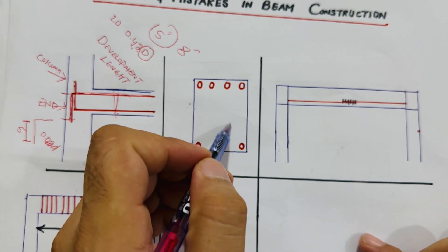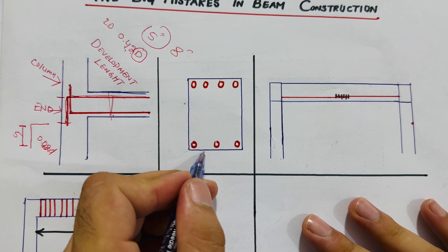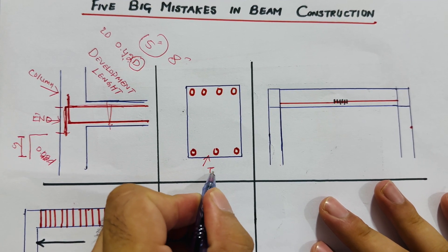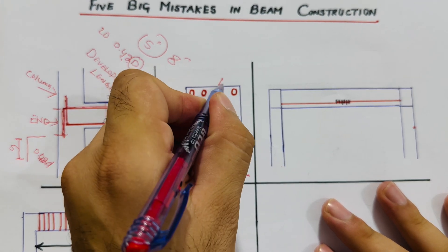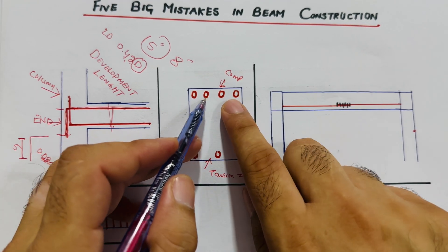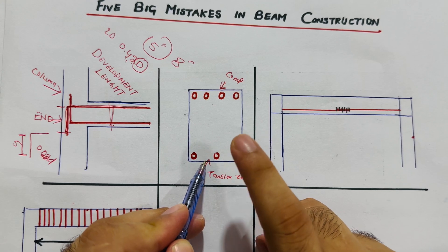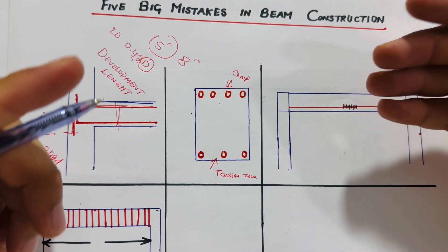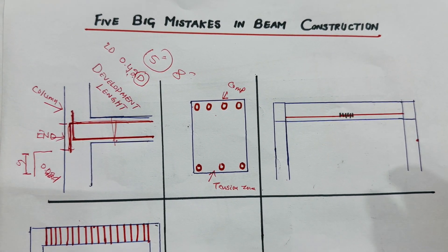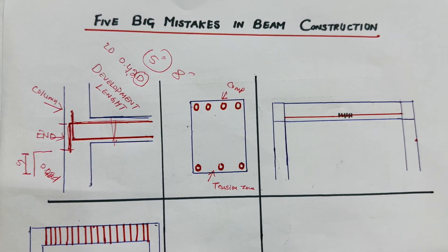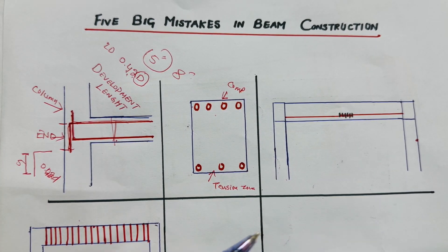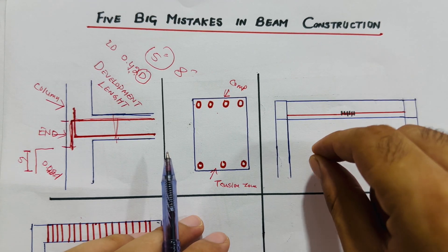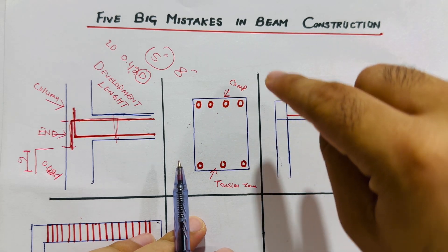The second mistake: in many constructions, builders provide three steel rods at the bottom and four at the top — this is wrong. The bottom is the tension zone and the top is the compression zone. Steel is weak in tension, and concrete is also weak in tension but strong in compression. Concrete is made from cement, sand, aggregate, and water, and it is weak in tension.